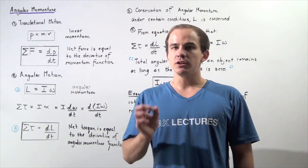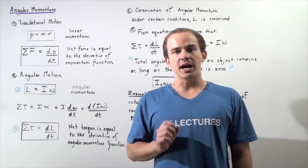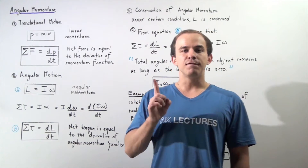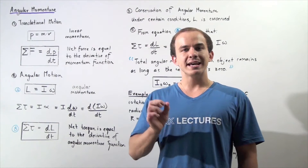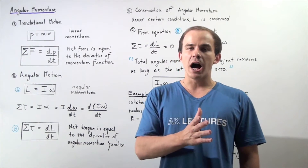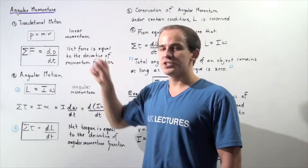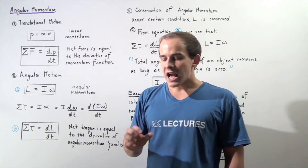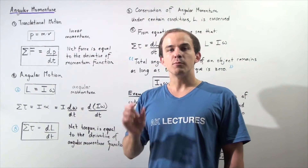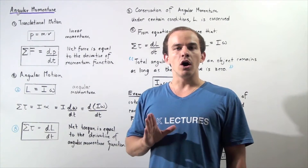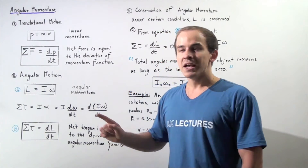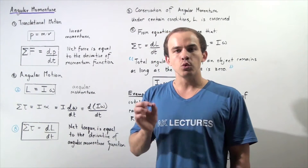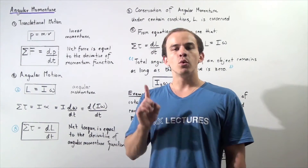Whenever an object is undergoing translational motion along a horizontal axis, that object is said to have linear momentum. Linear momentum is given by the equation: p equals the product of the mass of the object and the linear velocity of the object. Because velocity is a vector, linear momentum is also a vector. A more general way of defining momentum is by using Newton's second law of translational motion, which states that the net sum of forces acting on the object is equal to the derivative of the linear momentum function with respect to time.